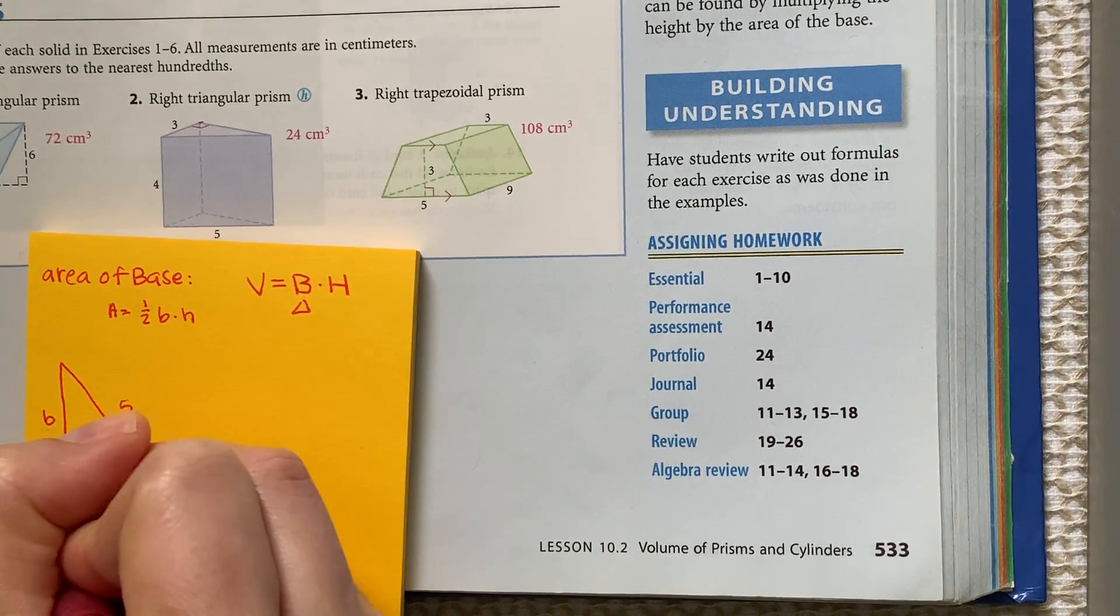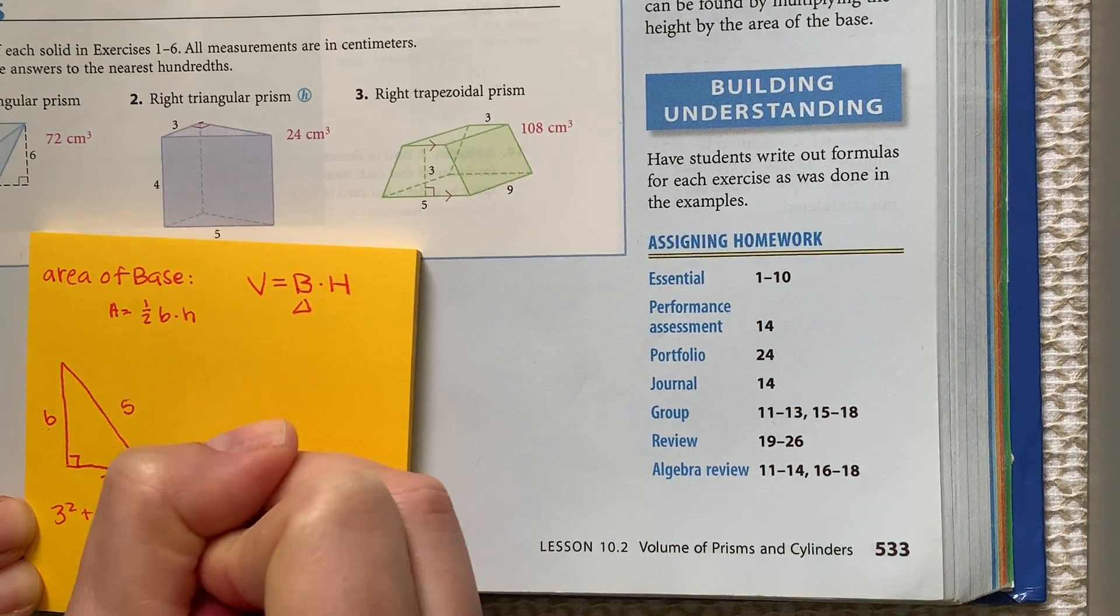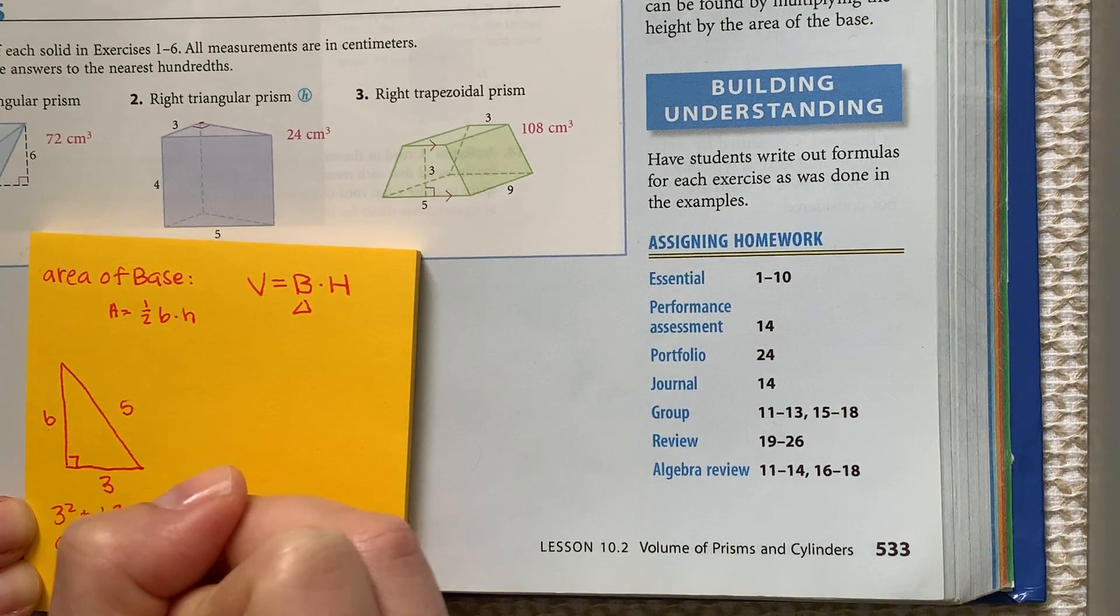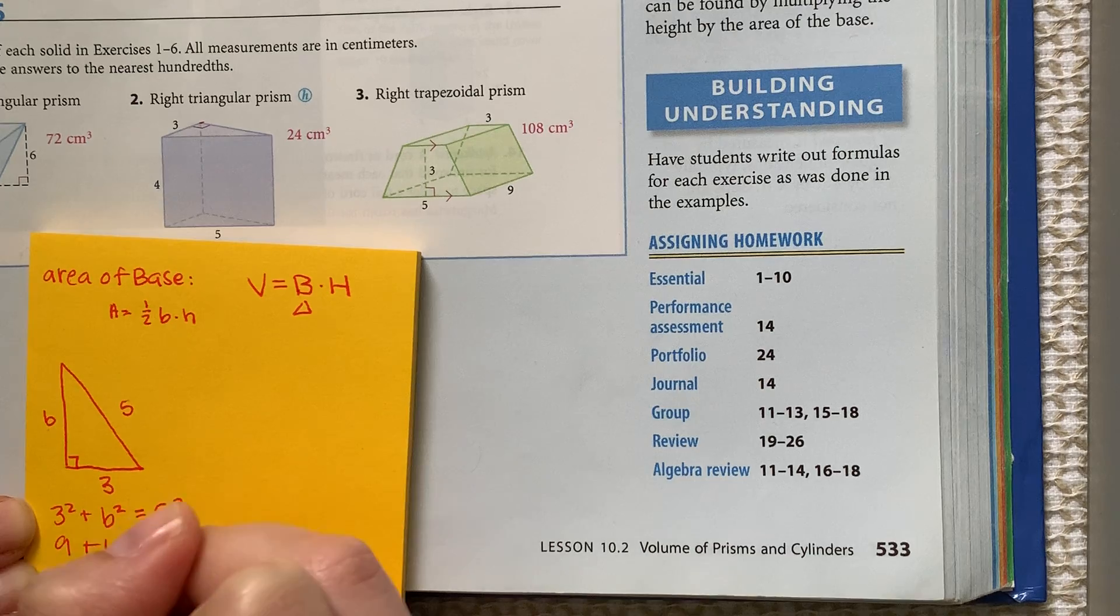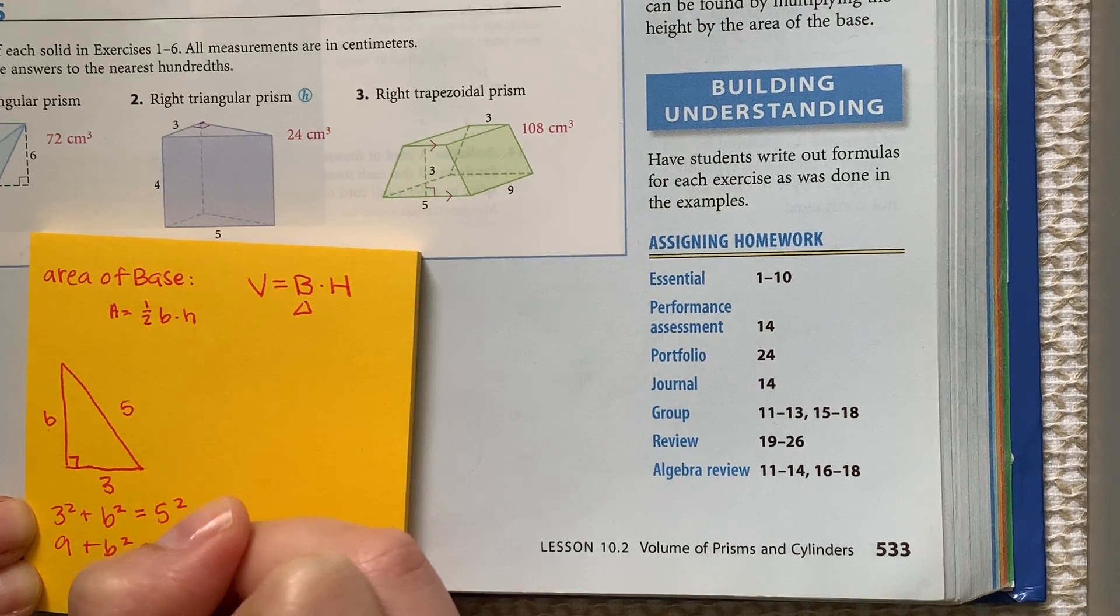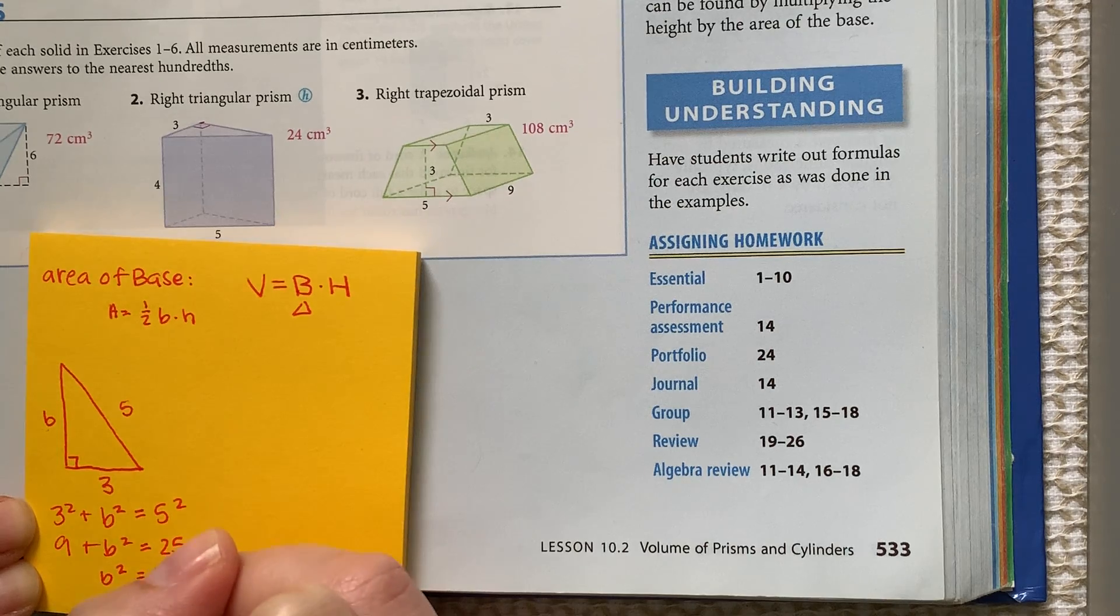So we have 3 squared plus b squared equals 5 squared. So it's going to be 9 plus b squared equals 25. Subtract 9 from both sides, we get b squared is equal to 16. And then we take the square root of both sides, and we get b is equal to 4.